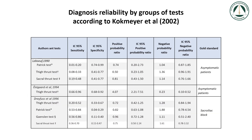It has been suggested that using a test cluster is a more reliable way to proceed — better than using individual tests. The meta-analysis by Kochmeyer et al. 2002 showed that a cluster of pain provocation tests has a kappa of 0.70, which is a relatively reliable method to evaluate somatic dysfunction of the sacroiliac joint.